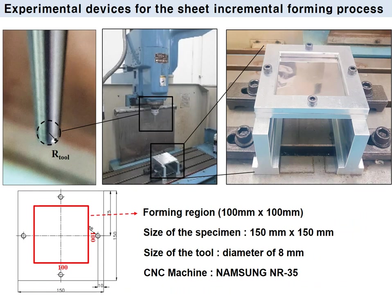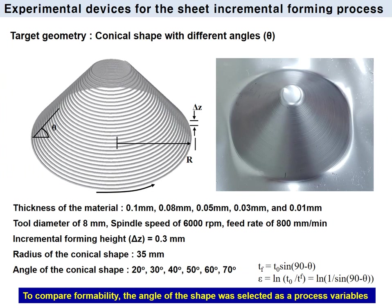The next slide presents the experimental devices for the incremental forming process. We employed a CNC machine, the Namsung NR35. The size of the holder was 150 mm by 150 mm, and the forming region was 100 mm by 100 mm. The tool was machined with a radius of 4 mm. The same tool and devices were used for all experiments. The target geometry was a conical shape with different angles. The forming conditions were a spindle speed of 6000 RPM, feed rate of 800 mm per minute, and an incremental forming step-down (delta Z) of 0.3 mm.